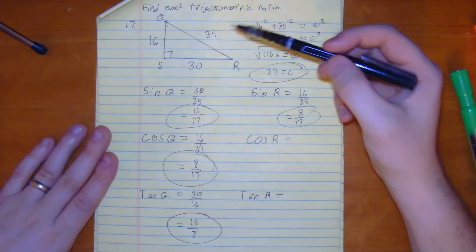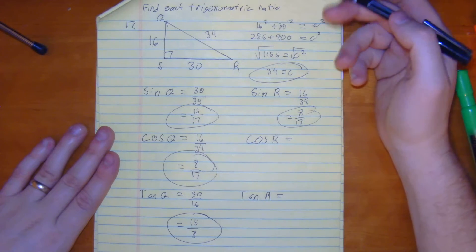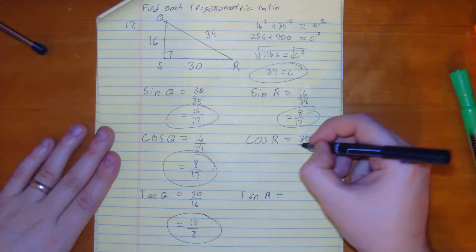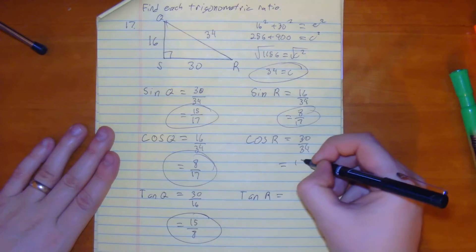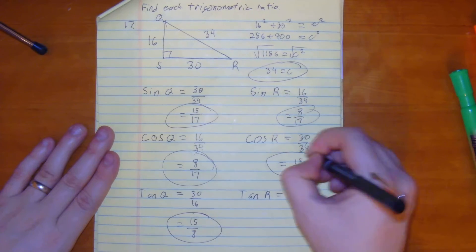Let's just see that. So the cosine of r would be 30 over 34. Look at that. These are the same exact same. Who would have thought? So we have 15 over 17 would be that.